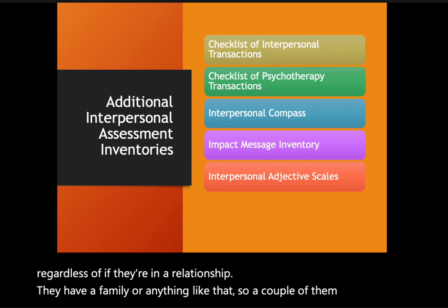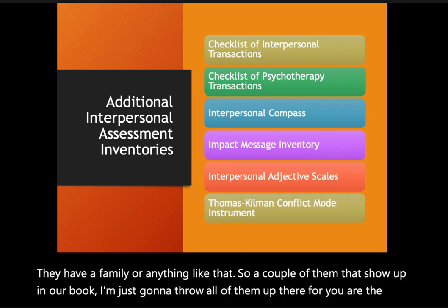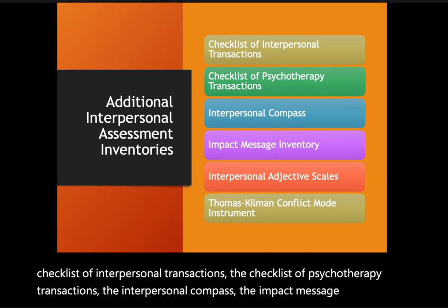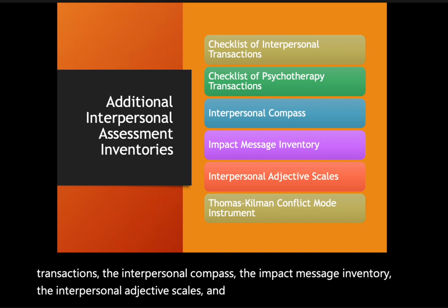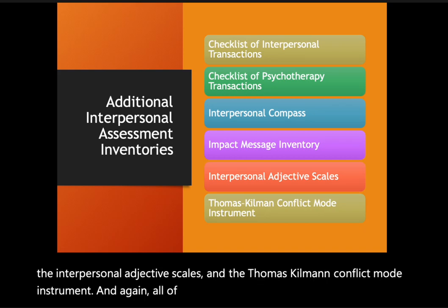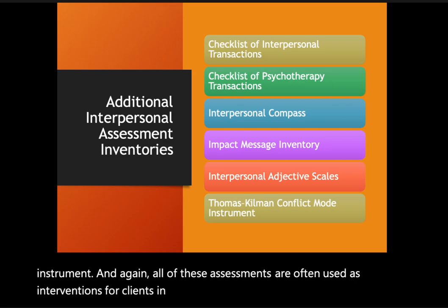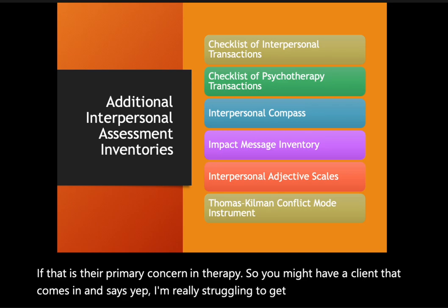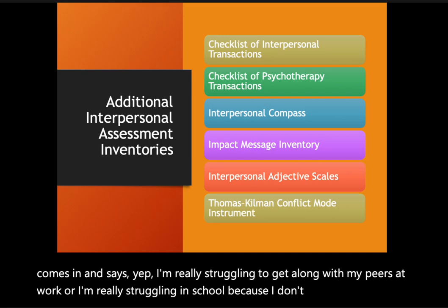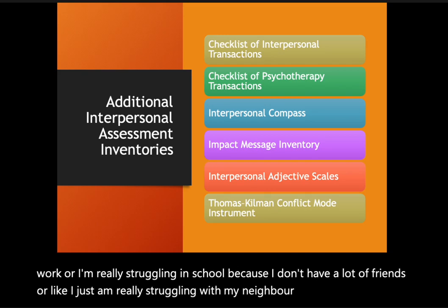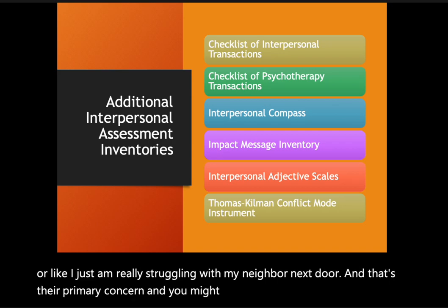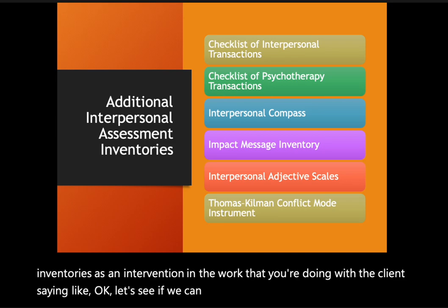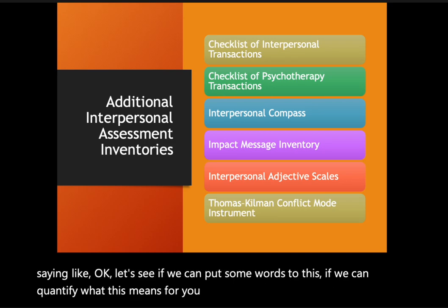A few of these assessments from our book include the Checklist of Interpersonal Transactions, the Checklist of Psychotherapy Transactions, the Interpersonal Compass, the Impact Message Inventory, the Interpersonal Adjective Scales, and the Thomas-Kilmann Conflict Mode Instrument. All of these assessments are often used as interventions for clients whose primary concern involves interpersonal reactions — for example, a client struggling to get along with peers at work, struggling to make friends, or having difficulties with a neighbor. You might pull out one of these assessments to put words to the experience and quantify what it means for them.